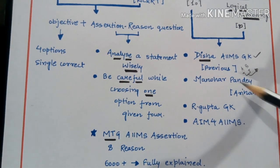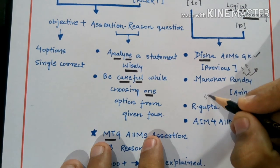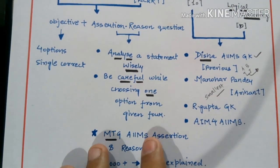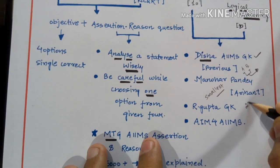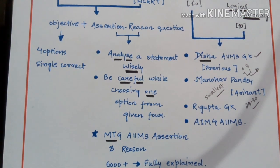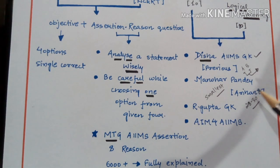If you don't want the Disha book, you can go for Manohar Pandey by Arihant Publications, which is also a very good book. It comes in different sizes, and you can choose the smallest one — a sort of handbook that costs approximately 25 to 30 rupees. Since only two weeks are left for the AIIMS entrance examination, you can't read a bulkier book, so this compact option is ideal.